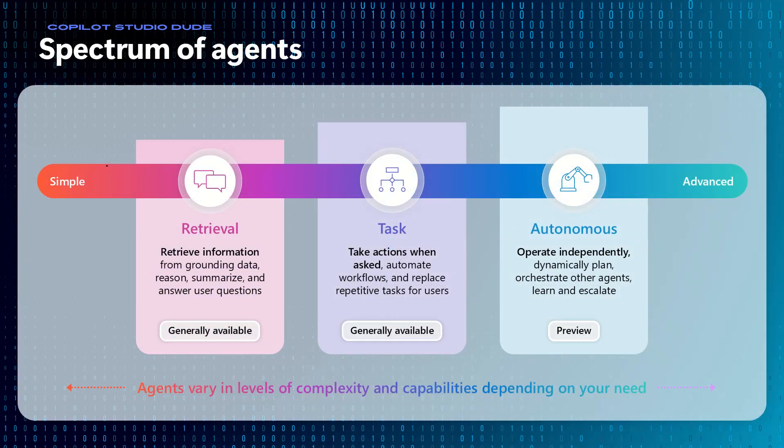If we think about the spectrum of different agents and how AI has started to evolve: originally we started with simple retrieval agents — things that answered questions using data, referred to as a RAG pattern or search-and-summarization. Then we moved to task-based agents, which could not only retrieve information but also service the person through a chat interface to do something like book a vacation or a flight.